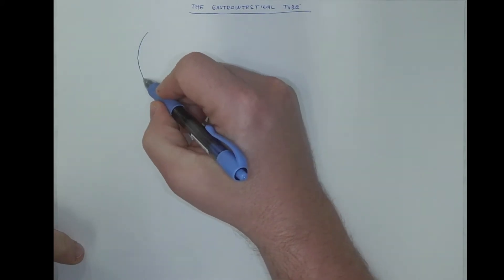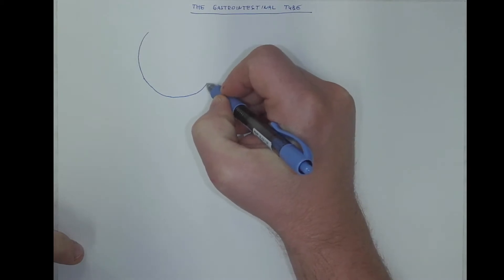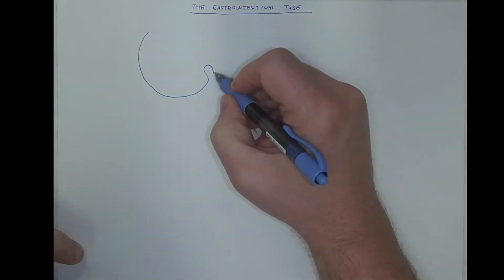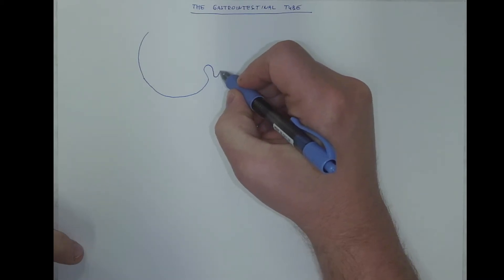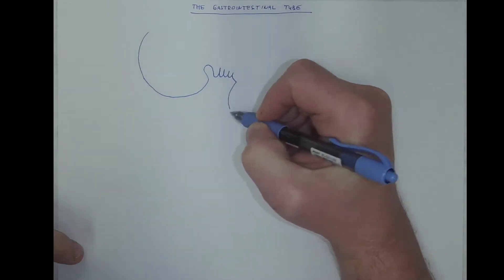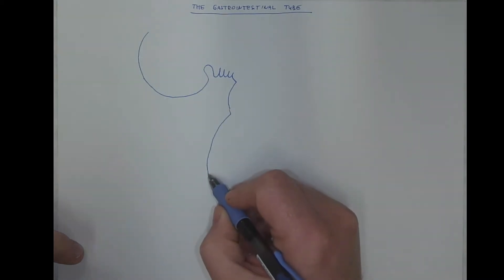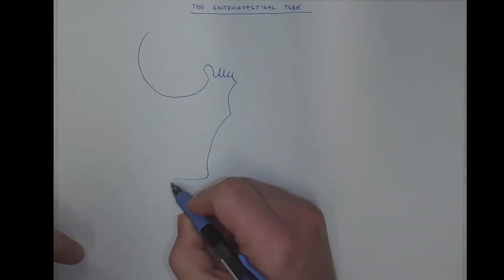So if this is the head of the embryo, we got an invagination called stomodium, then we got the series of pharyngeal arches, the first largest one, second, third, fourth, then the cardiac bulge, then the hepatic bulge, then the umbilicus.